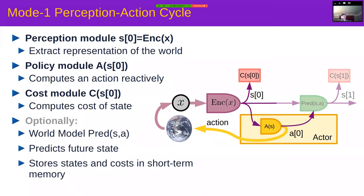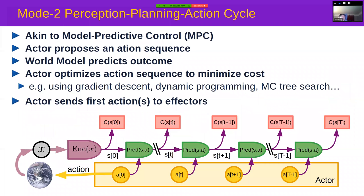Simultaneously, the system can use its world model to predict what would have happened and what the cost would have been, and store that in short-term memory for future reference — needed to train the critic and the world model. Mode 2 is akin to model predictive control: a perception-planning-action cycle where the system makes a percept, the encoder estimates the state of the world, the world model runs for multiple time steps, and the actor proposes an initial sequence of actions.